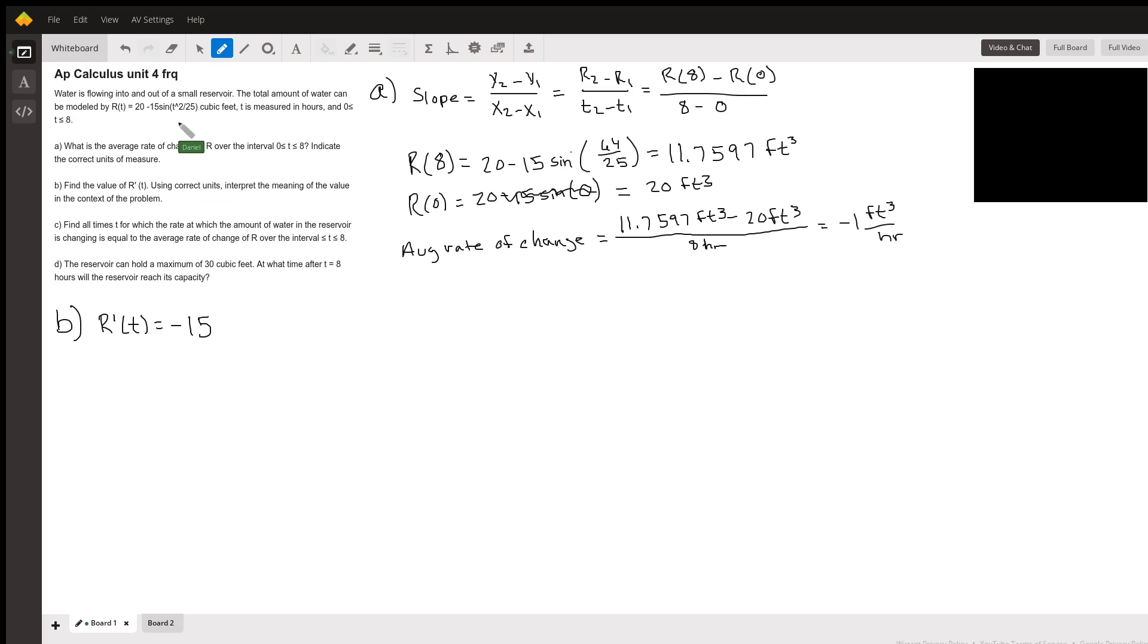So let's start with the derivative of the outside function. The derivative of sine is cosine, and let's keep the inside the same, so T squared divided by 25. And then now we need to multiply by the derivative of the inside function. So I can take the 1 over 25 to the front and then take the derivative of T squared, which is 2T. So let me go ahead and multiply everything. I have a negative 15 times a 2T, so that's negative 30T divided by 25, times cosine of T squared divided by 25.